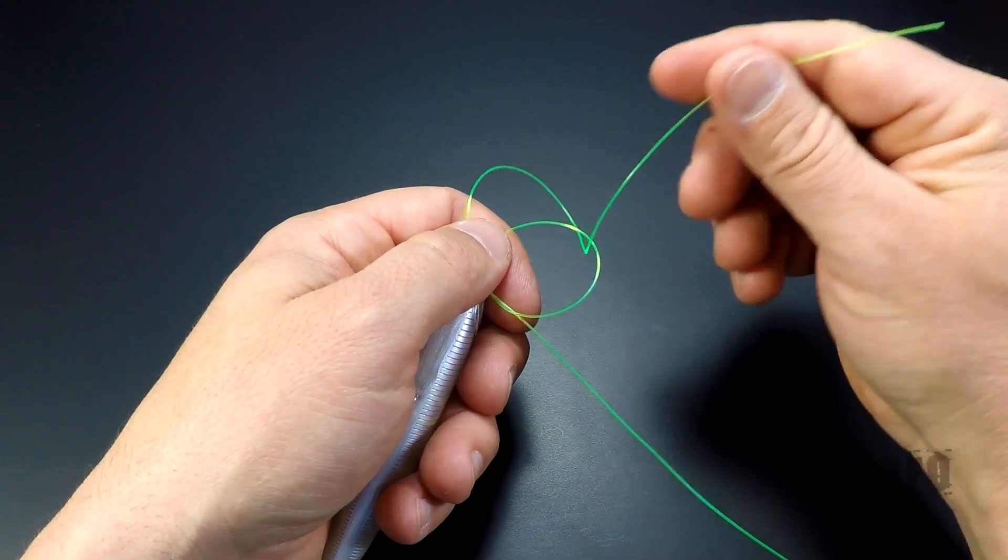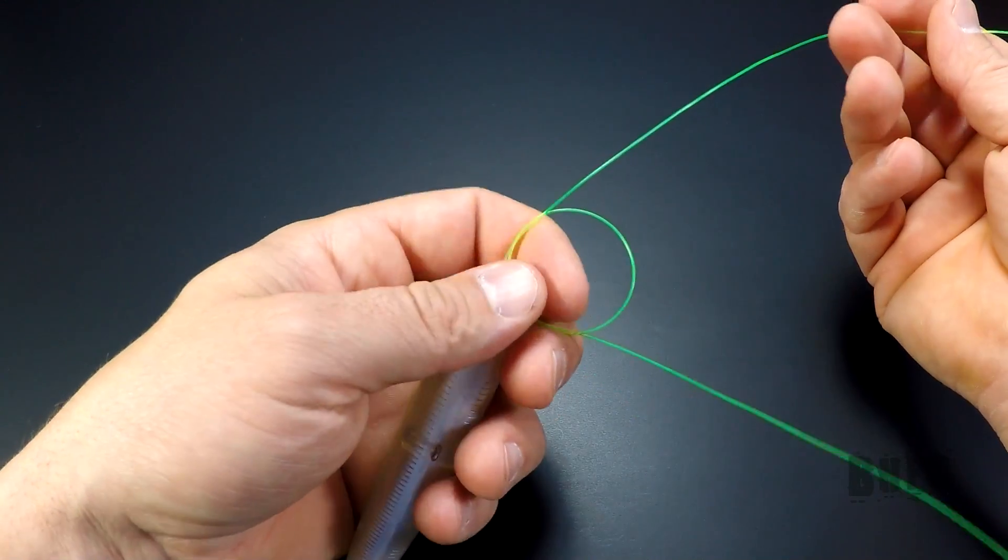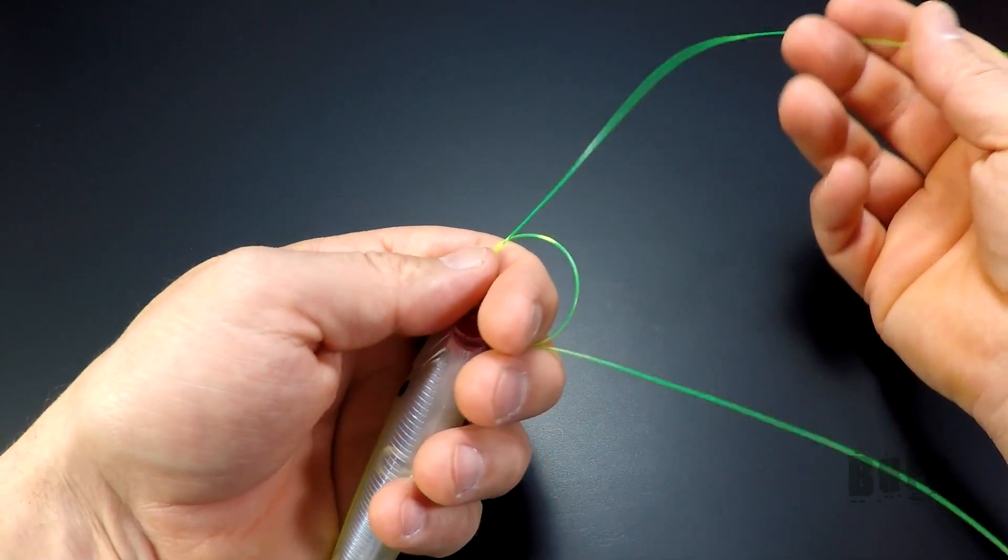Now, put the tag up through the overhand knot, pulling out about 5 inches of tag.